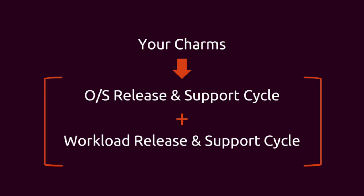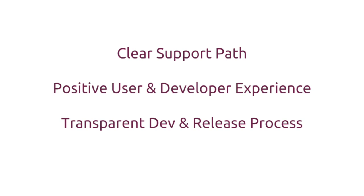Your charms can do the same thing: identify which OSes you want it to work on, identify which versions of the thing you're deploying that you wish for it to work. And I may be biased, but define your testing around that before you get too far into development. There are a handful of good things you want to come out of this: a clear support path, people knowing what to expect and where it will work. Positive user and developer experience are always a good thing, and having that process transparent is helpful for those involved.